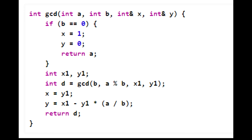Here is the implementation code. Basically, when B is equal to 0, X is equal to 1 and Y is equal to 0 like we said before. And at this point, A is going to equal the GCD, so we just return A.